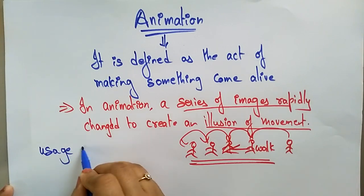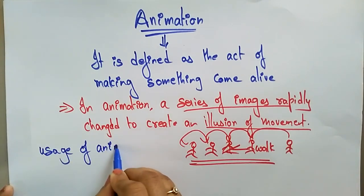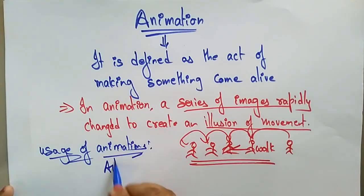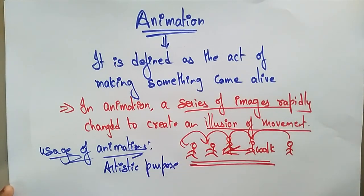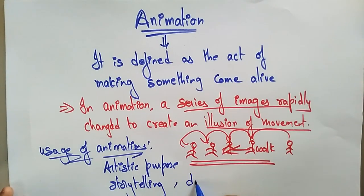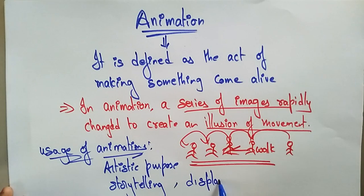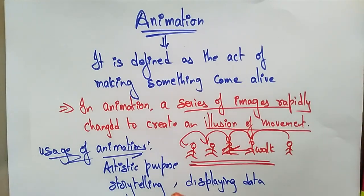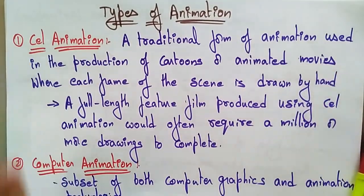Where do we use animation? In the artistic purpose, in the field of storytelling — animated pictures are nowadays very famous — and in displaying data in scientific visualization, and in instructional purposes. In these areas we mostly use animations. Now let me explain the different types of animations.